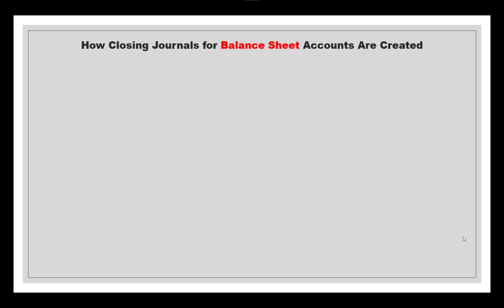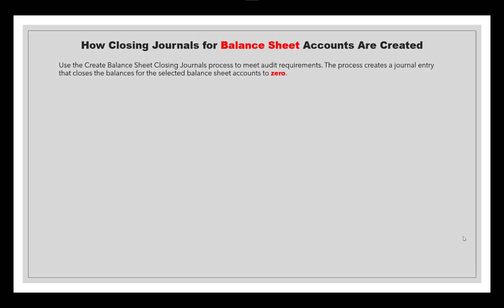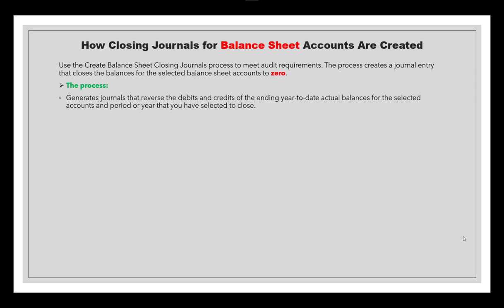Let's look at how closing journals for balance sheet accounts are created. Use the create balance sheet closing journal process to meet audit requirements. The process creates a journal entry that closes the balances for selected balance sheet accounts to zero. It generates journals that reverse the debit and credit of the ending year-to-date actual balances for the selected accounts and period or year selected to close. All amounts will be zero after you run this process. You can then transfer the balance — the net of reversed assets, liabilities, and equity — to a closing account you specify.